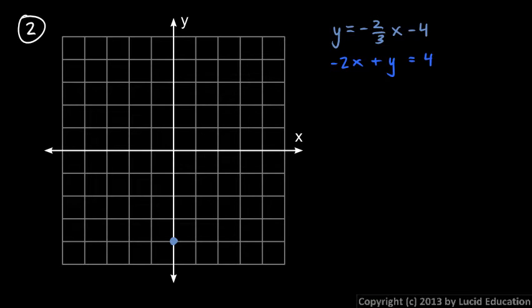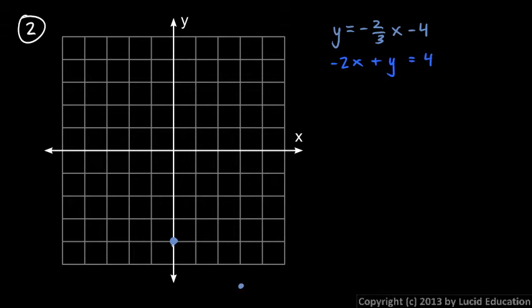Number two: y equals negative two-thirds x minus four. This has a y-intercept of minus four down here, and a slope of negative two-thirds. So that means I go down two over three. That's going to put me about right here, which is off of our graph. But I can continue this same trend by going up two and left three, and that gets me to this point right here. So I can still graph the line.